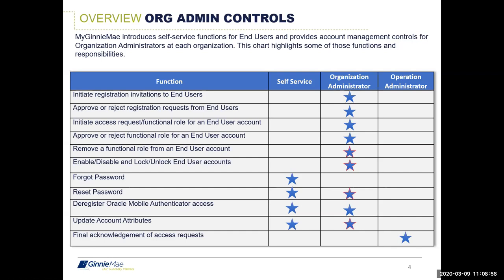In today's presentation, we're going to focus on what we call management activities. We're going to focus on discussing how to remove a functional role from an end user account — for example, if an end user moved to another part of the business and needs a new role assigned or a role removed because their business functions have changed. We're going to talk about how to enable and disable, lock and unlock end user accounts in the access management console, how you can reset a password on behalf of an end user, and how to update account attributes like a user's phone number, business title, or add an RSA token after the account has been created.